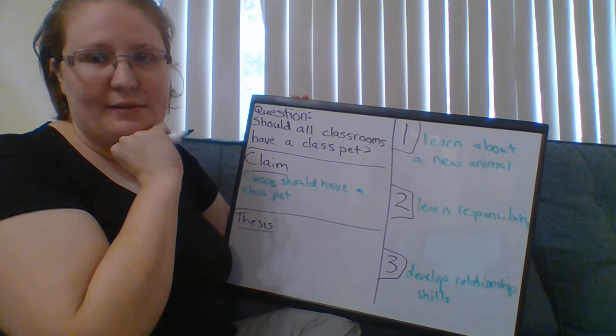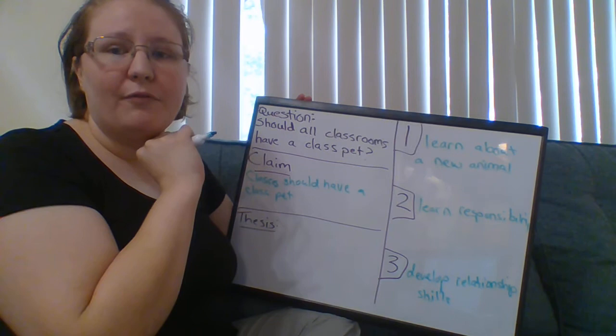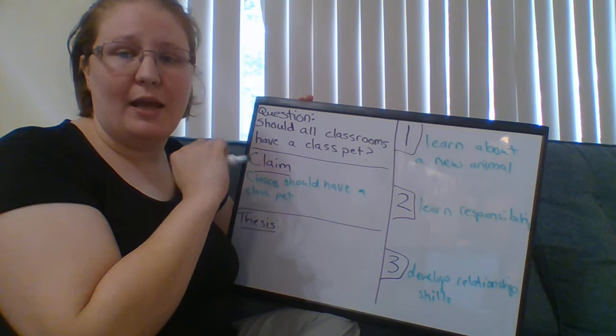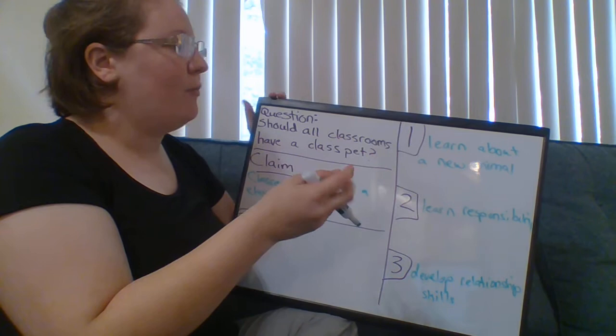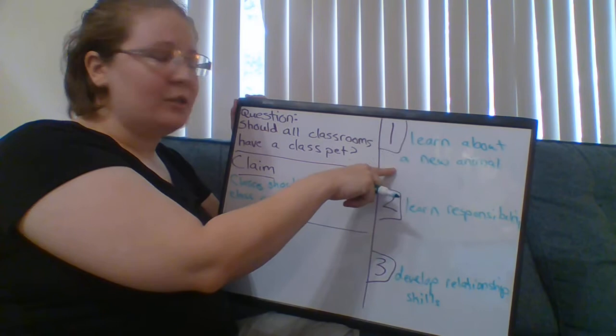This is just to show you how to write a thesis, so the one we're going to do is: can people learn from history? So you're going to write either yes, people can learn from history and then your three reasons why, or no, people can't learn from history. And remember, like I put here, I put learn about a new animal - can you write more than just a sentence about learn about a new animal?